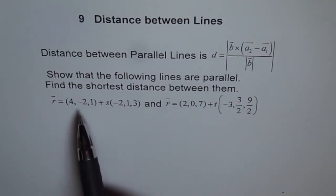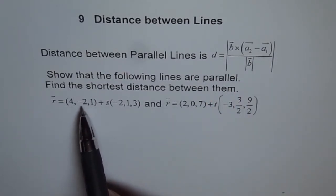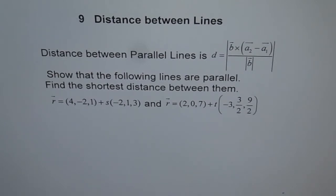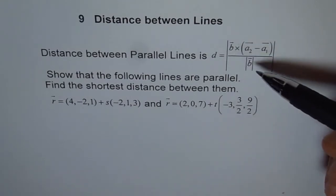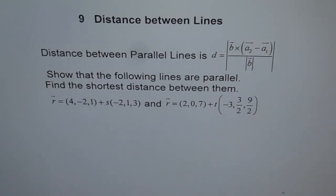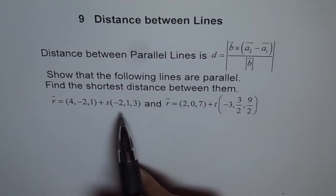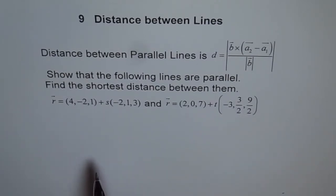And a2 minus a1 is the other direction which we get from the two given points. So, when we do the cross product of this, we get the shortest normal distance and we divide by the magnitude of the direction vector to get a unit vector in this direction.